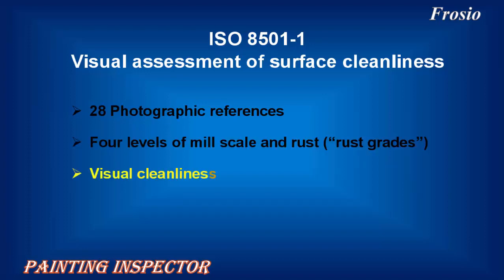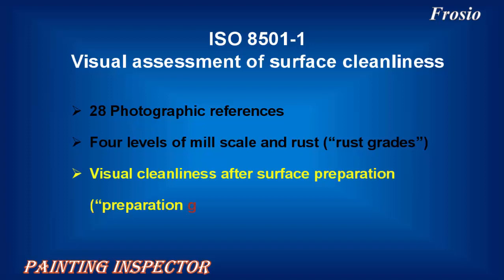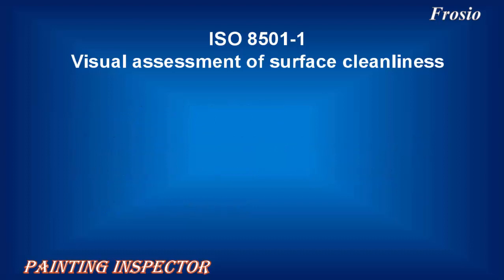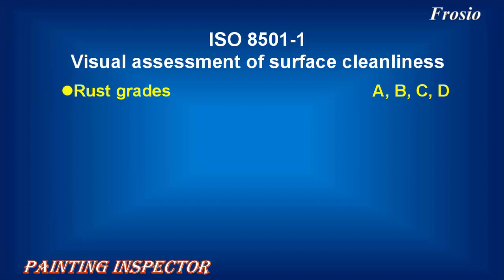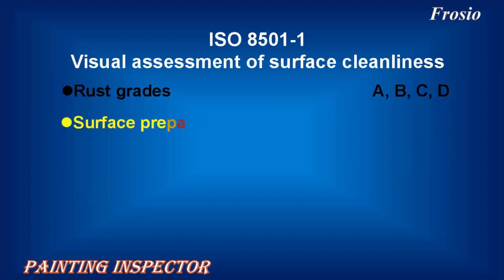ISO 8501-1 also defines visual cleanliness after surface preparation, known as Preparation Grades. The standard covers Rust Grades A, B, C, and D, as well as the corresponding Surface Preparation Grades.